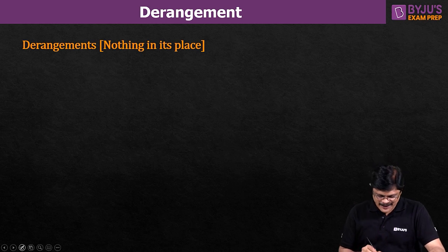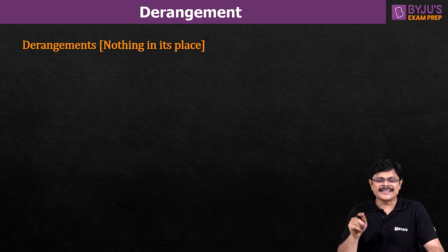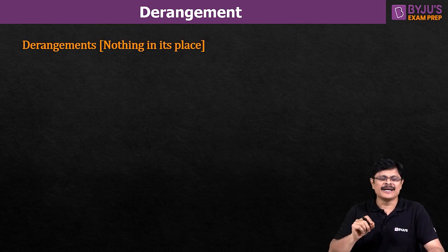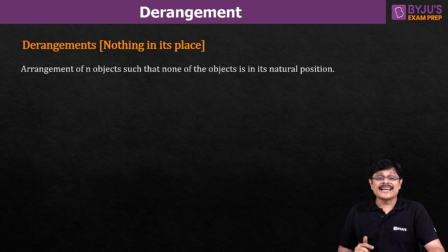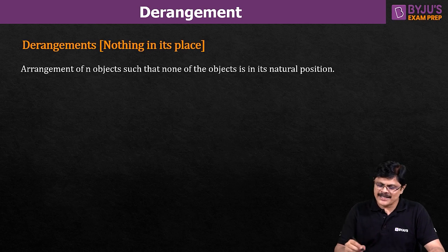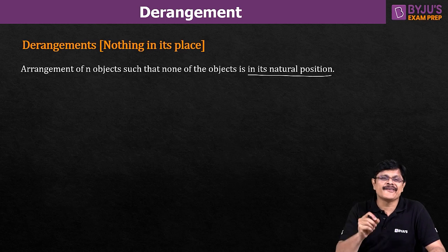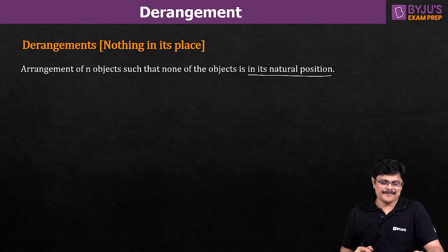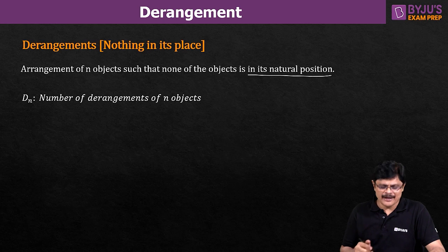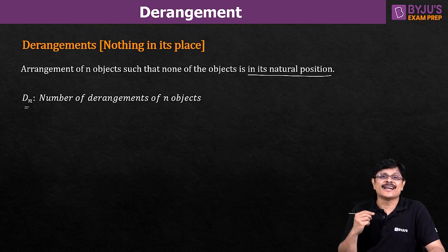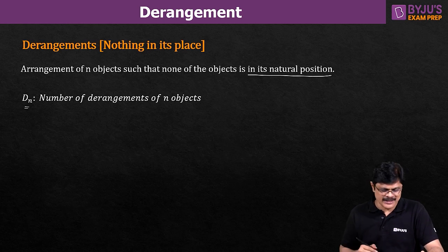Derangement. The meaning of derangement is nothing is in its place — no element is occupying its natural position. An arrangement of objects such that none of the objects is in its natural position is what we call a derangement. We denote dn to represent the number of derangements of n objects.